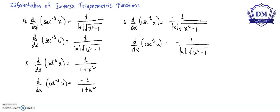We have the derivative of the inverse secant of x is equal to 1 all over the absolute value of x times the square root of x squared minus 1. Then using the chain rule, the derivative of the inverse secant of u with respect to x is equal to 1 all over the absolute value of u times the square root of u squared minus 1, times du over dx.